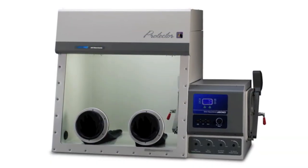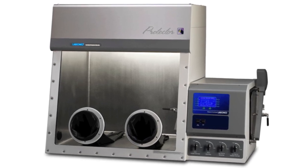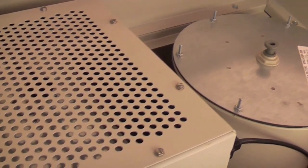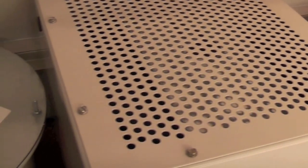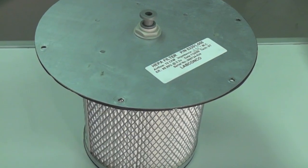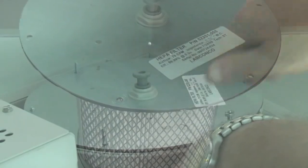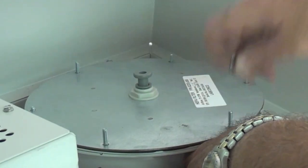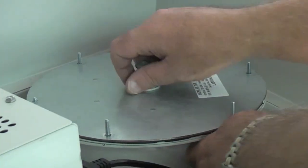Protector filtered glove boxes feature fiberglass or stainless steel liner options. Fiberglass boxes have inlet and outlet HEPA filters that are 99.99% efficient on 0.3 micron particulates. Stainless steel boxes have inlet and outlet ULPA filters that are 99.999% efficient on 0.12 micron particulates.